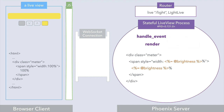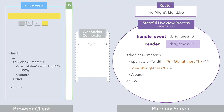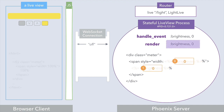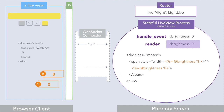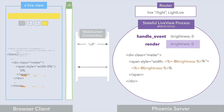If we click the off button, an off event is sent and handled, which sets the brightness to zero and render is invoked. And since the live view template is tracking changes to state, it recognizes that brightness changed. So all it sends back to the client are those dynamic values that were modified.